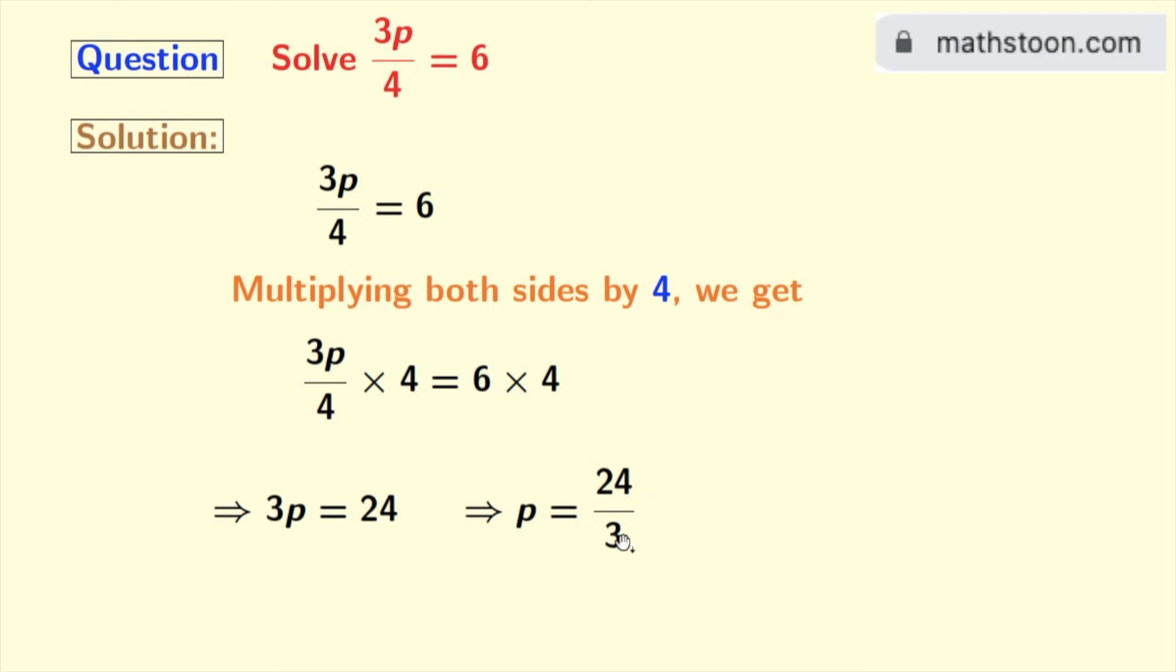we have 24 by 3, which is 8. So finally, we get p is equal to 8. And this is our final answer.